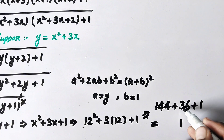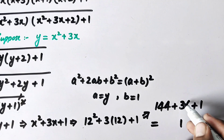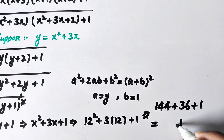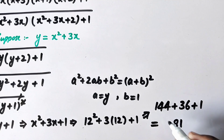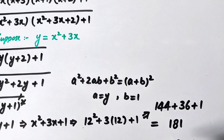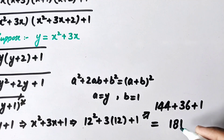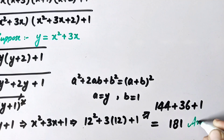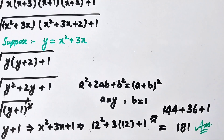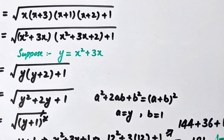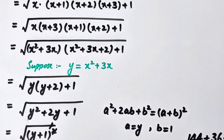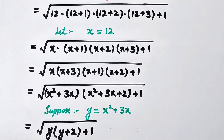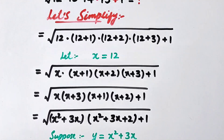Adding these up: 144 plus 36 plus 1 equals 181. So the final answer is 181. I hope you liked the video — please subscribe to my channel for more videos. Thanks for watching, take care, bye.